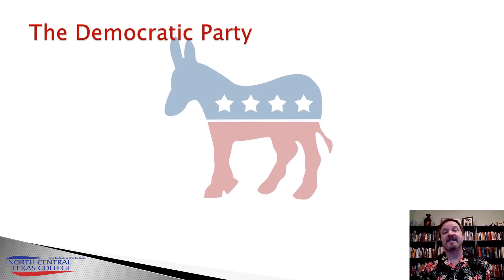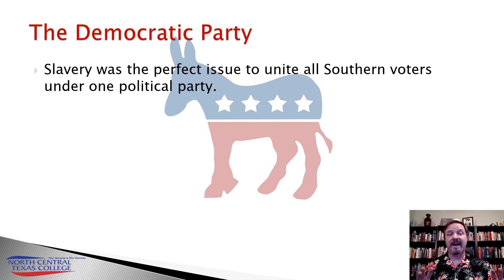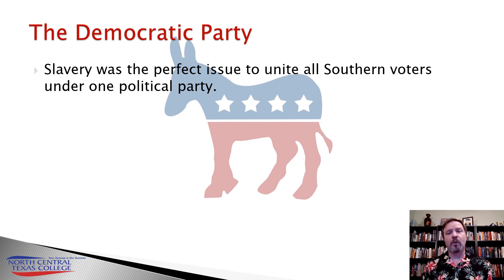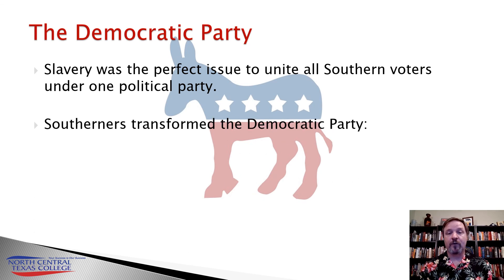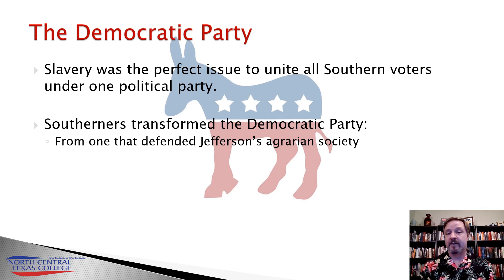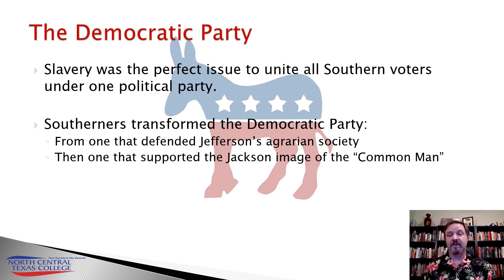The answer as to which party Southerners would take control of was pretty obvious: the Democratic Party. It was the perfect vehicle to unite all Southerners under one political banner. The Liberty Party, the Free Soil Party, and the Republican Party were anti-slavery parties. The Whig Party was divided between aristocratic slave owners in the South and Northern abolitionist factory owners — the slavery issue would ultimately tear the Whig Party apart. The Democratic Party was the only one left, and so Southerners transformed it from one that defended Jefferson's agrarian ideals and Jackson's image of the common man into a party geared at defending the institution of slavery.